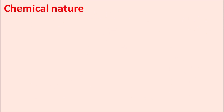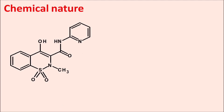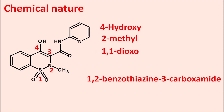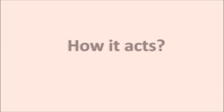Now let us see the chemical nature of pyroxicam. Here we can observe it is having the benzothiazine ring system. Starting the numbering from sulfur: position 1, then 2, 3, 4, and so on. This ring is the 1,2-benzothiazine with an amide moiety at the third position — written as 1,2-benzothiazine-3-carboxamide. At the fourth position a hydroxy group is present, at position 1,1 a dioxo group is present, and on the nitrogen of the amide, a pyridine ring is attached at the second position — N-pyridin-2-yl. That is the complete name of piroxicam.